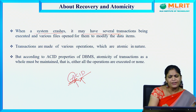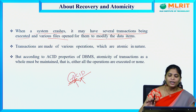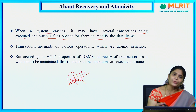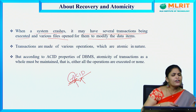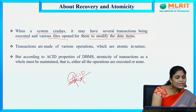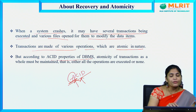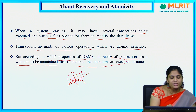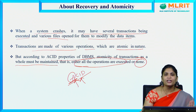When a system crashes, it may have several transactions being executed and various files open for them to modify data items. While we are doing transactions, some failure may occur or a system crash may occur. Transactions are made of various operations which are atomic in nature. According to ACID properties of DBMS, atomicity means either all operations are executed or none of the operations in a transaction are executed.